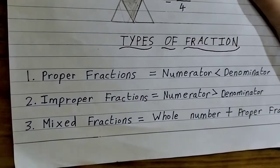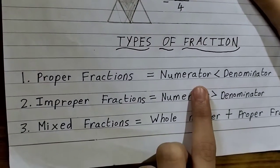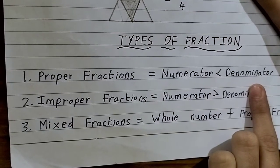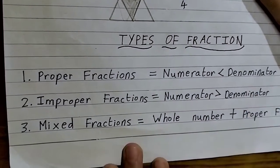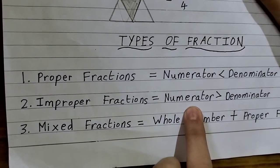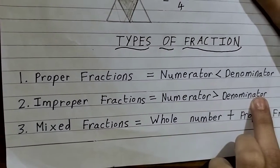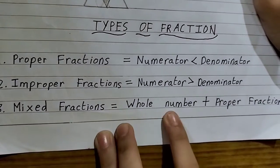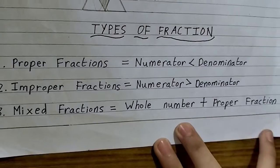In proper fraction, we have numerator smaller than the denominator. In improper fraction, we have numerator greater than the denominator, and in mixed fraction, we have whole number plus proper fraction.